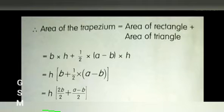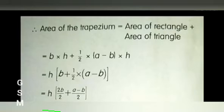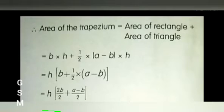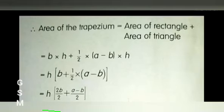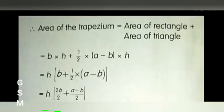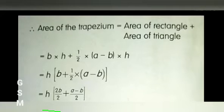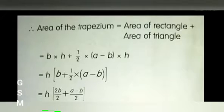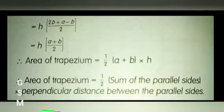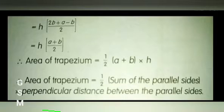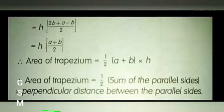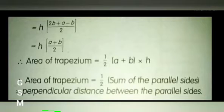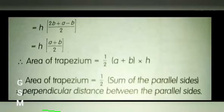Therefore, area of the trapezium equals area of rectangle plus area of triangle, which equals b × height + half × (a minus b) × height, which simplifies to height × (a + b) divided by 2. Therefore, area of trapezium equals half into (a plus b) into height, or half into the sum of the parallel sides into the perpendicular distance between the parallel sides.